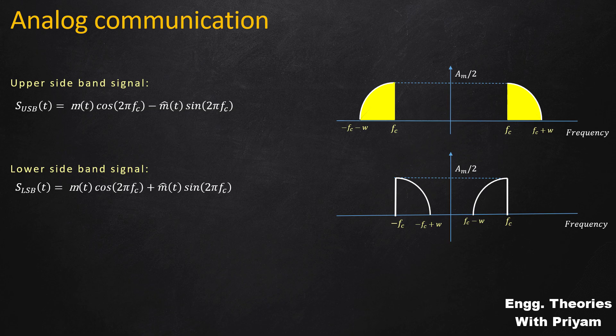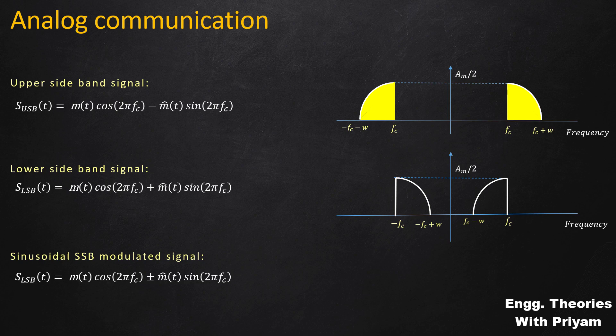If we examine both equations, we can see that they differ from each other in only one respect: the minus sign in the upper sideband equation is replaced by a plus sign in the lower sideband. So we can combine these two equations and define a general SSBSC modulated signal as m(t)·cos(2π·fc·t) ± m̂(t)·sin(2π·fc·t).